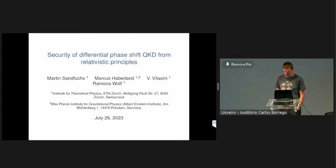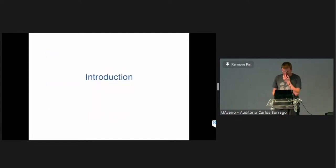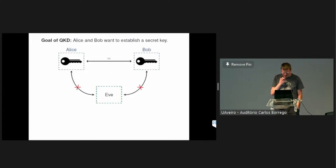This is joint work together with Markus, Markus Villassini, and Ramona. So first I will give a very brief introduction. But just to recap, we have two parties, Alice and Bob. They aim to establish a shared key. So it should be the same between the two. That's the correctness statement. And it should be uncorrelated to Eve. That's the secrecy statement.